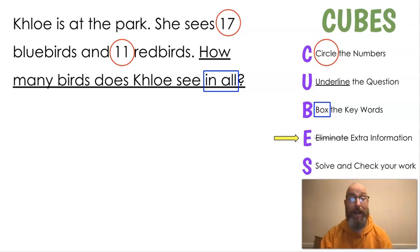Next, we're going to look for extra information. Is there extra information in this one? There is. What information up there is just noise? We don't need to know that. Chloe is at the park. That doesn't matter. All we need to know is that she saw 17 and 11 birds and how many we saw in all. The park, that's just a distraction. So then we could go straight to solve.